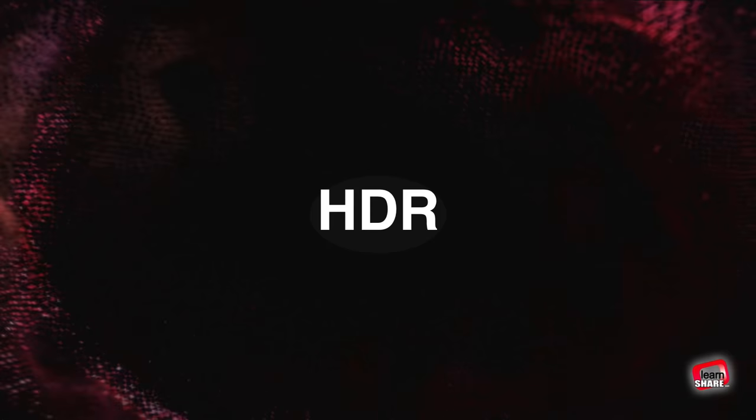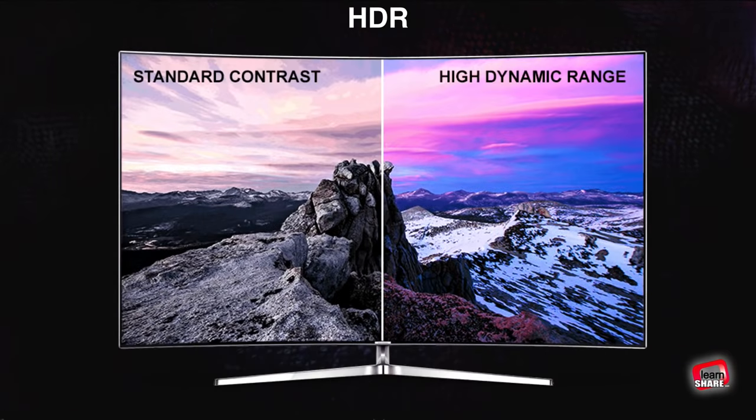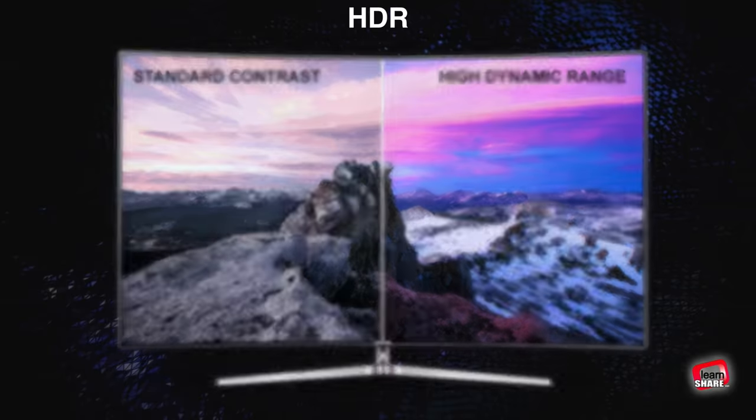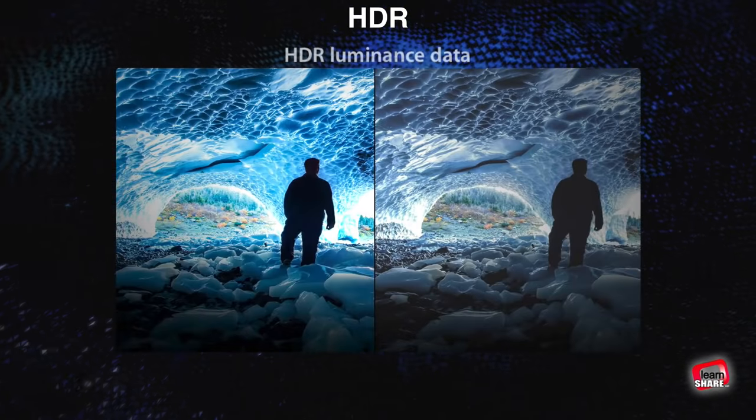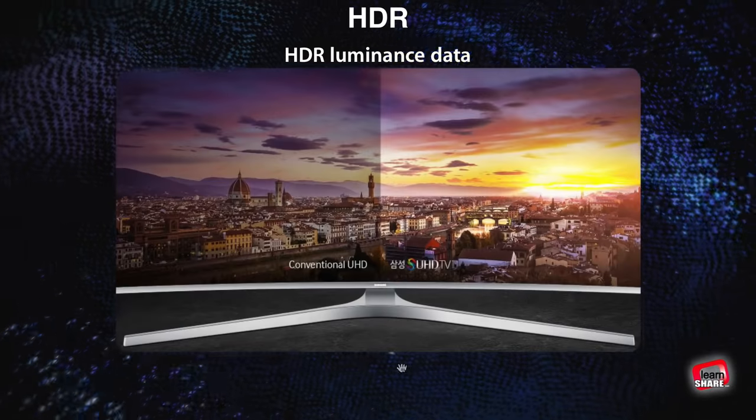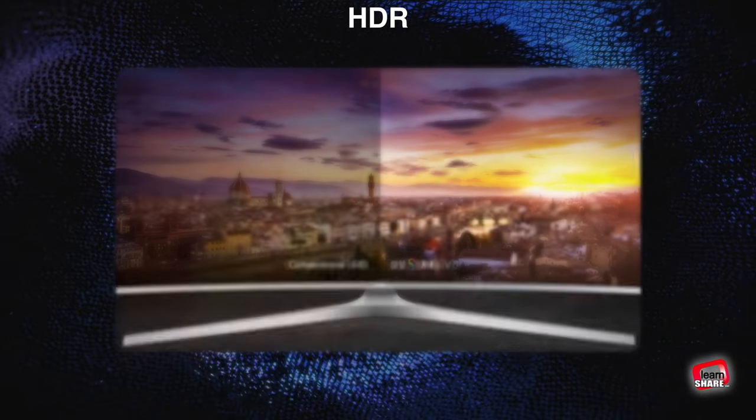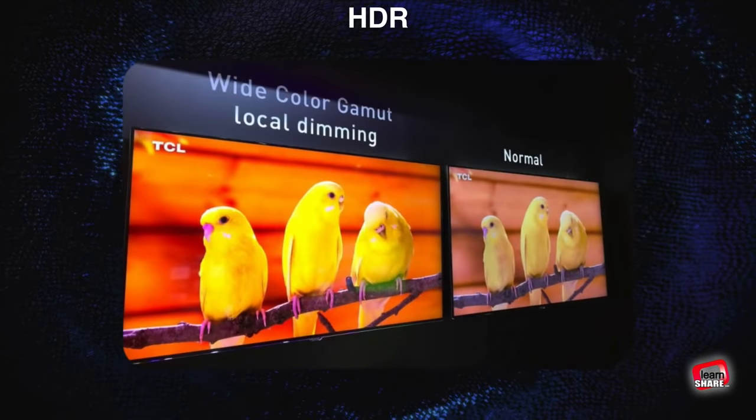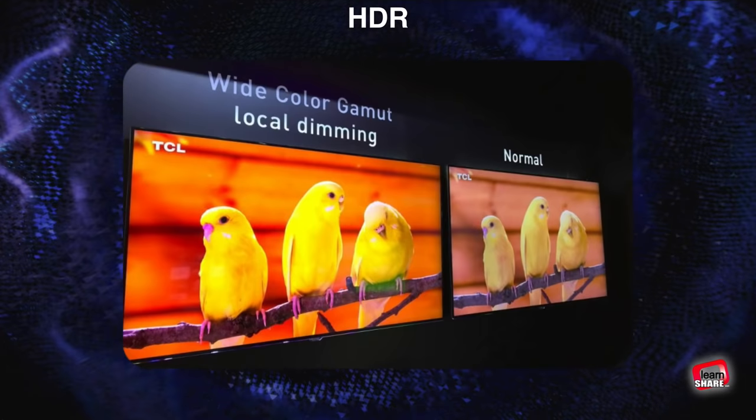High Dynamic Range HDR TVs are able to produce pictures that contain much more brightness and contrast than normal TVs, as long as what you're watching contains HDR luminance data. All current HDR TVs also support wider color spectrums, often described as wide color gamut or WCG.